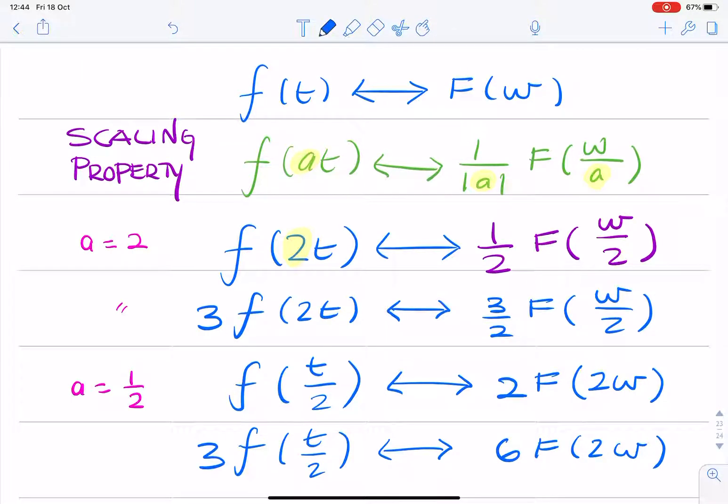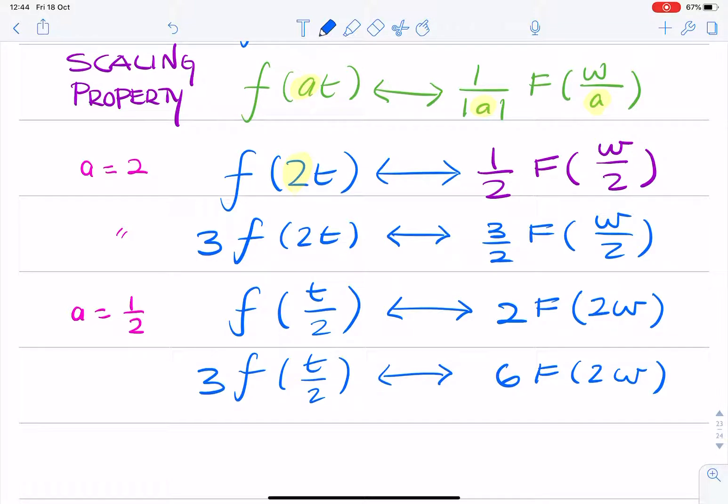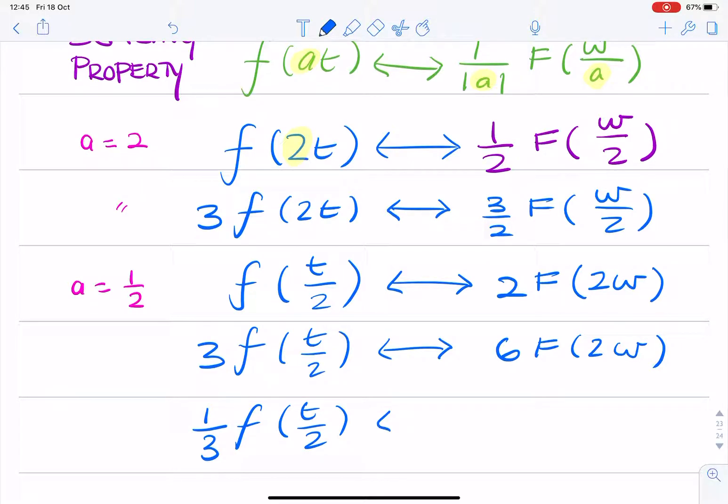And the final question has a fraction here. So 1 over 3 times f of t over 2. And you simply have that same multiple, 1 over 3, multiplied by 2, multiplied by F of 2 omega. Because the value of a hasn't changed. It's still a half. So we still have that 2 here and we still have that 2 here.